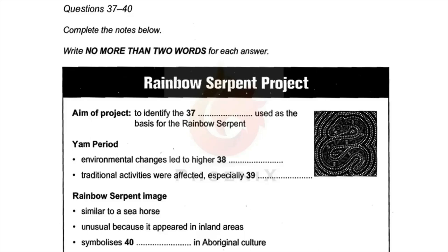We studied 107 paintings of the Rainbow Serpent, and found that the one creature that matches it most closely was the ribboned pipefish, which is a type of seahorse. This sea creature would have been a totally unfamiliar sight in the inland regions where the image is found, and it may have been the inspiration behind the early paintings.